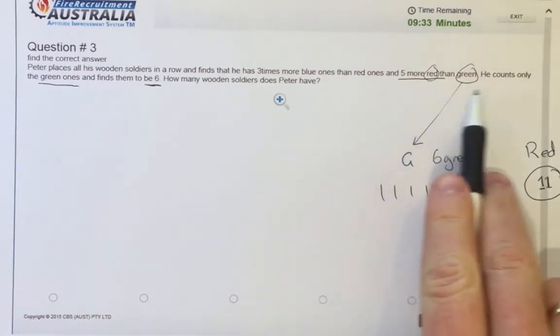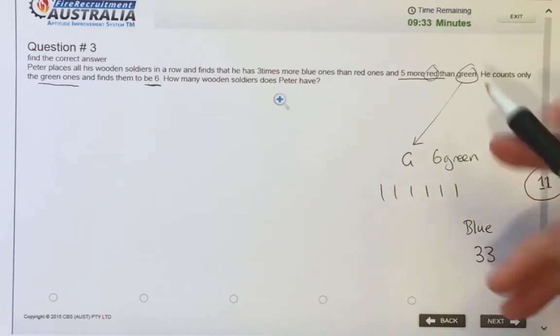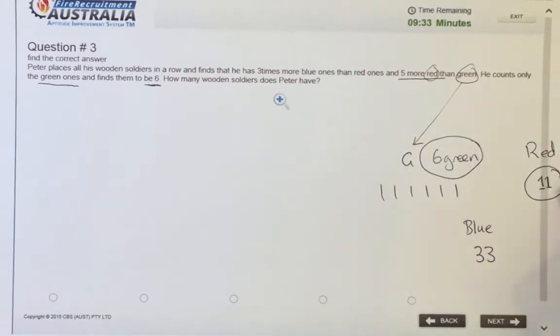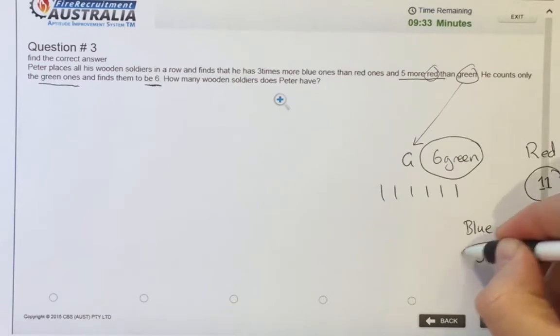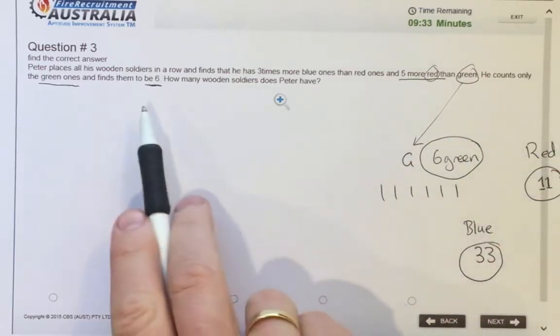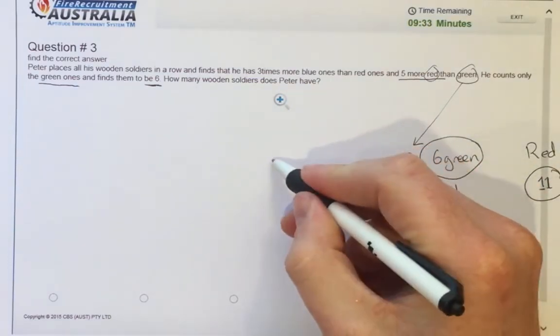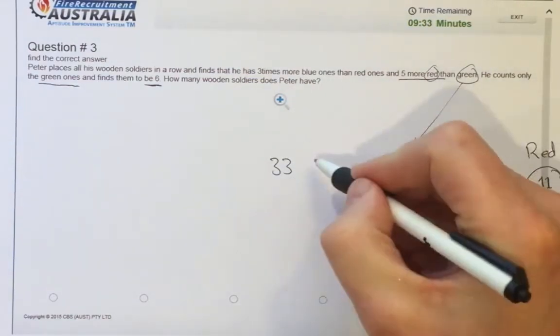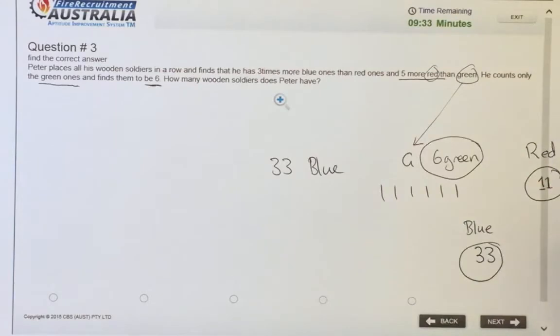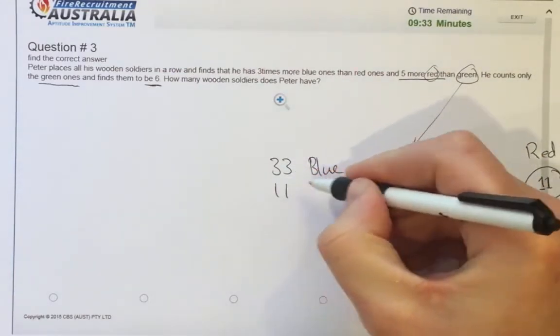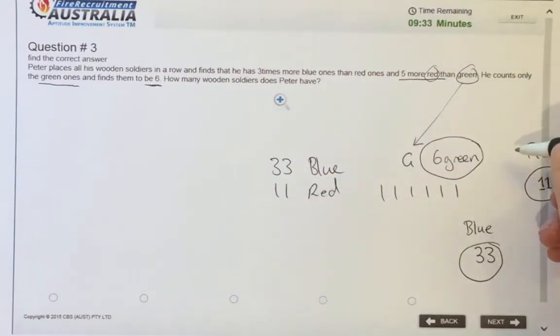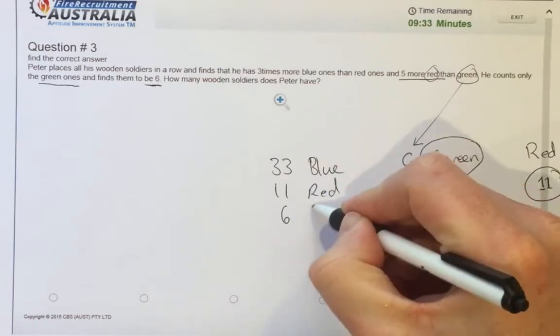And what's the actual question? So we've got six green, 11 red, and 33 blue. How many wooden soldiers does Peter have? So he's got 33 blue, 11 red, and six green.